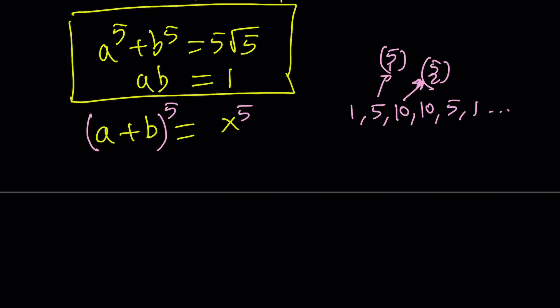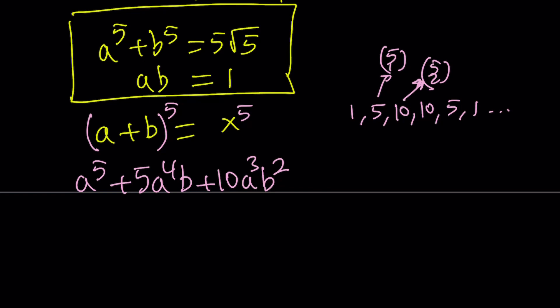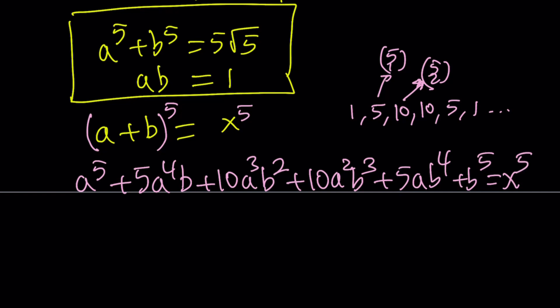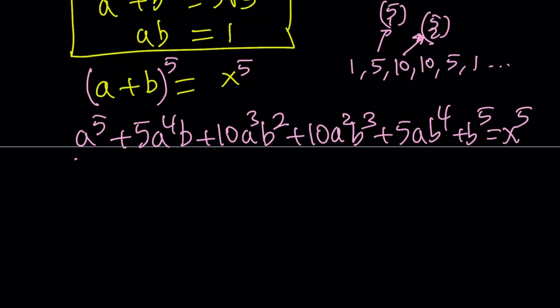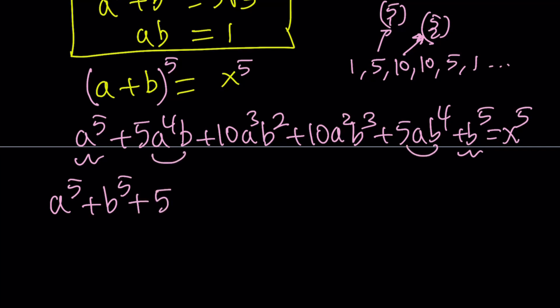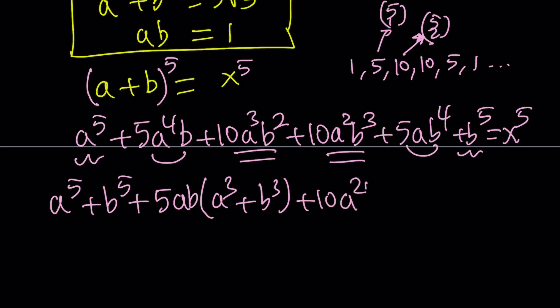We get the coefficients for the fifth row. I'm going to expand this, putting like terms together. The powers of a are decreasing and b is increasing, with a nice symmetry. This gives us x⁵. Now I'd like to put the first and last terms together since we know a⁵ + b⁵, and factor out 5ab to get a³ + b³, then factor out 10a²b² to get a + b.